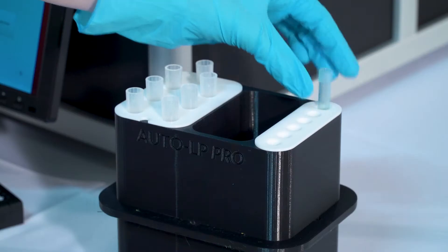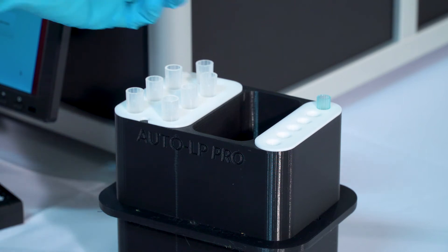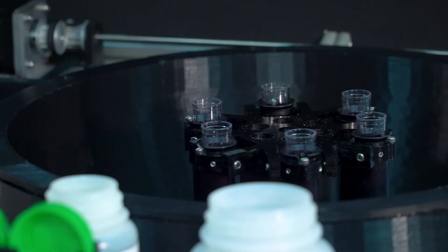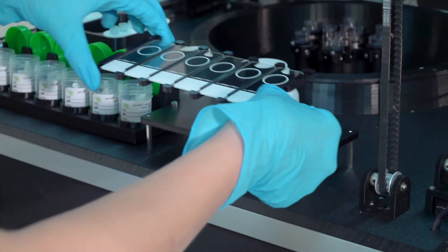It's simple to use. Populate the AutoLP Pro with pipettes, centrifuge tubes, working tubes, and microscope slides.